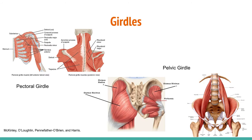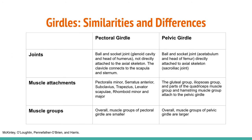The pectoral girdle consists of the lateral ends of the clavicle and scapula along with the proximal ends of the humerus, and the muscles covering these three bones stabilize and support the shoulder joint. The pelvic girdle consists of the os coxae, sacrum, coccyx, and the proximal ends of the femur. The appendicular muscles of the lower body position and stabilize the pelvic girdle, which serves as a foundation of the lower limbs.